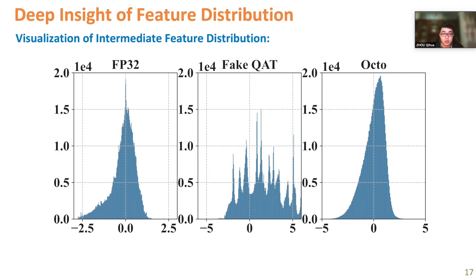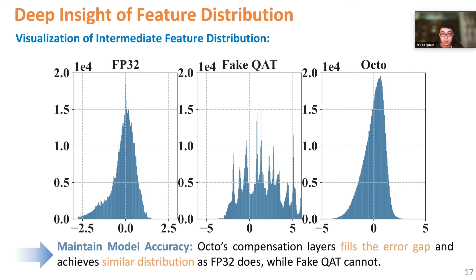We provide deep insights into how OCTO works by visualizing intermediate tensor distributions over convolutional layer outputs. Fake quantization holds a distinct distribution because conducting dot products in the quantized domain incurs significant errors in the final output. In contrast, the compensation layers inside OCTO fill the error gap and achieve a similar data distribution to fp32, thereby maintaining model accuracy.